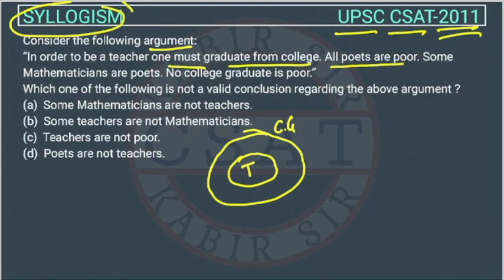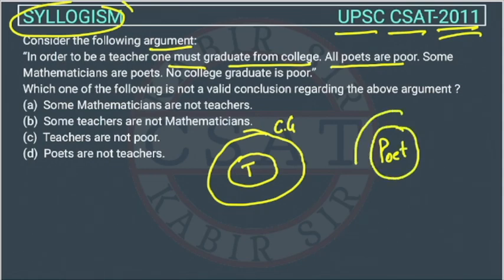Second premise: all poets are poor. So all poets — this is the Venn diagram of poet — they all are poor.